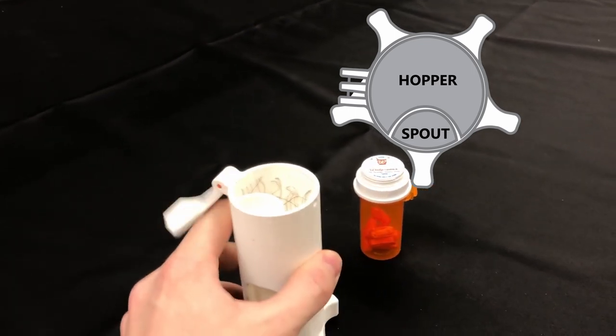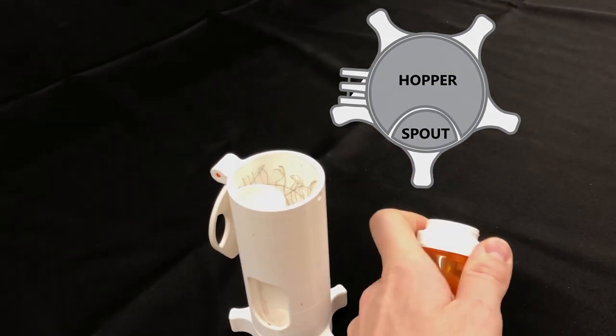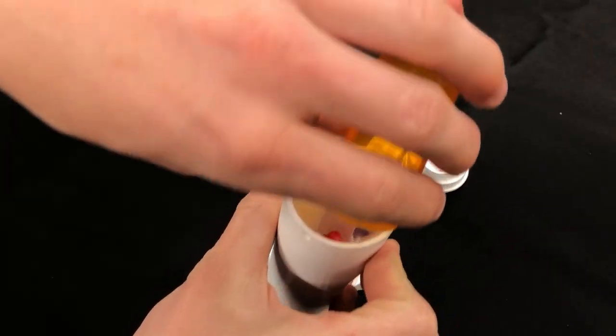The larger opening is the hopper. Pills can be poured into the hopper section. The top cap can then be closed back up.